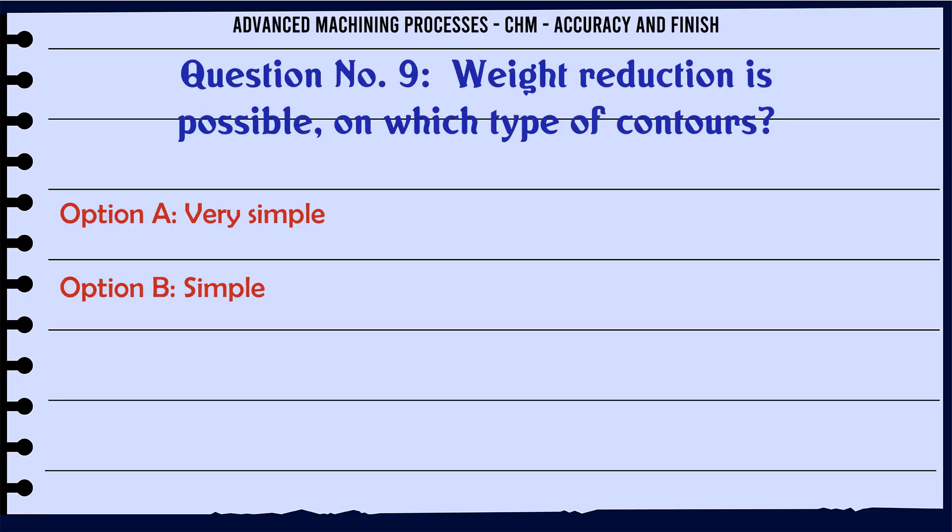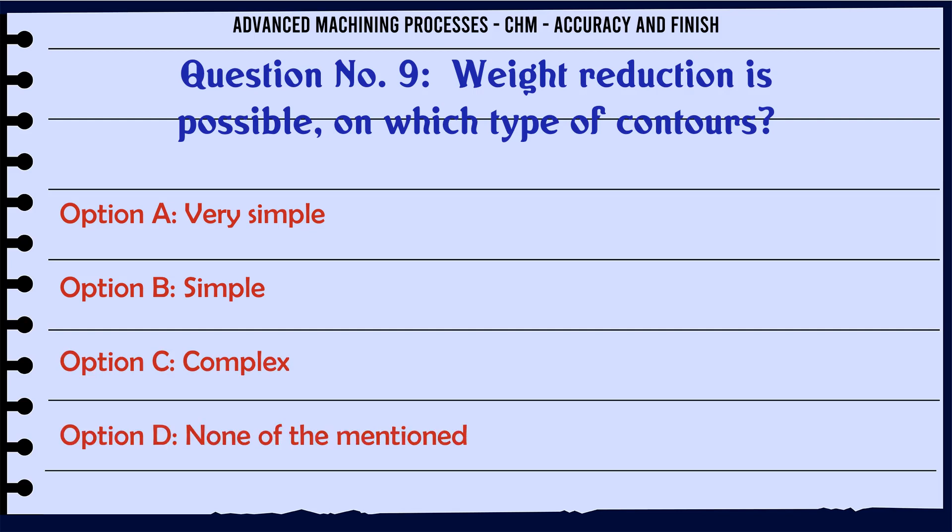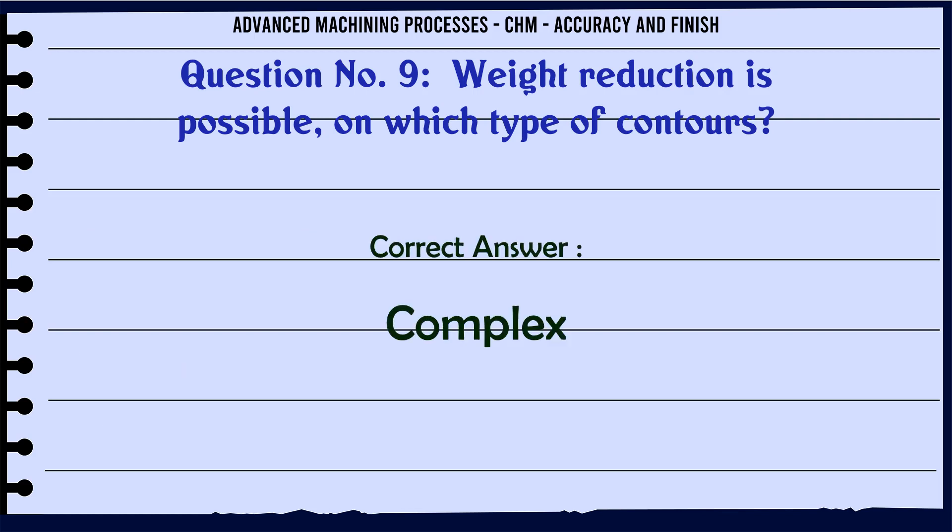Weight reduction is possible on which type of contours? A. Very simple. B. Simple. C. Complex. D. None of the mentioned. The correct answer is complex.